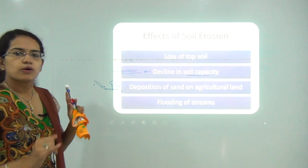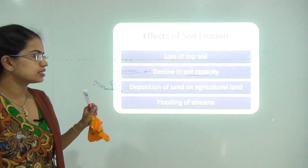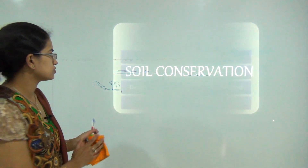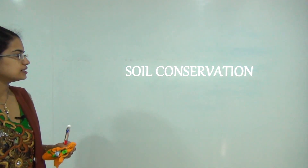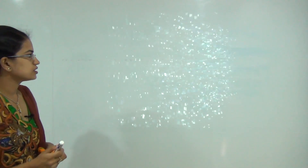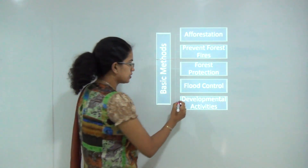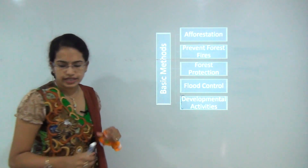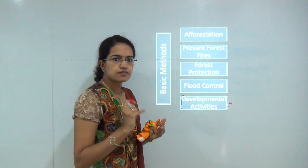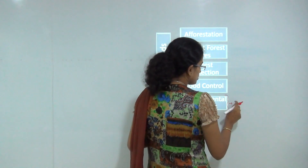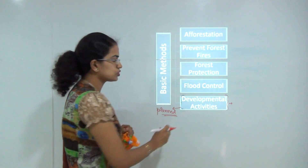Now we have talked about the factors, causes, and effects of soil erosion. The most important section is how do we conserve soil. Soil conservation is an important parameter with various methods. The fundamental methods include controlling developmental activity — any urban or industrial area needs demarcated areas for agriculture, mining, and residential and commercial schemes. Planned developmental activity would definitely provide a boost to soil conservation.